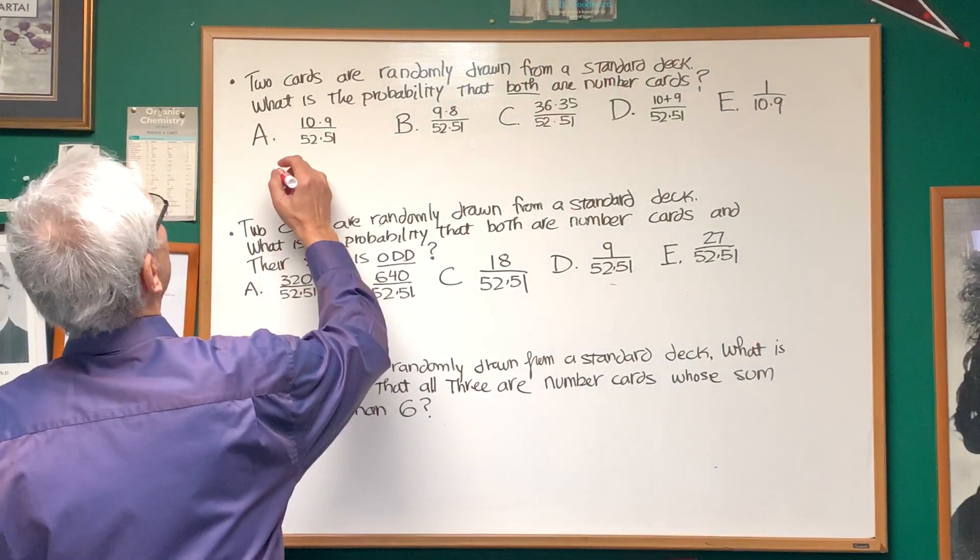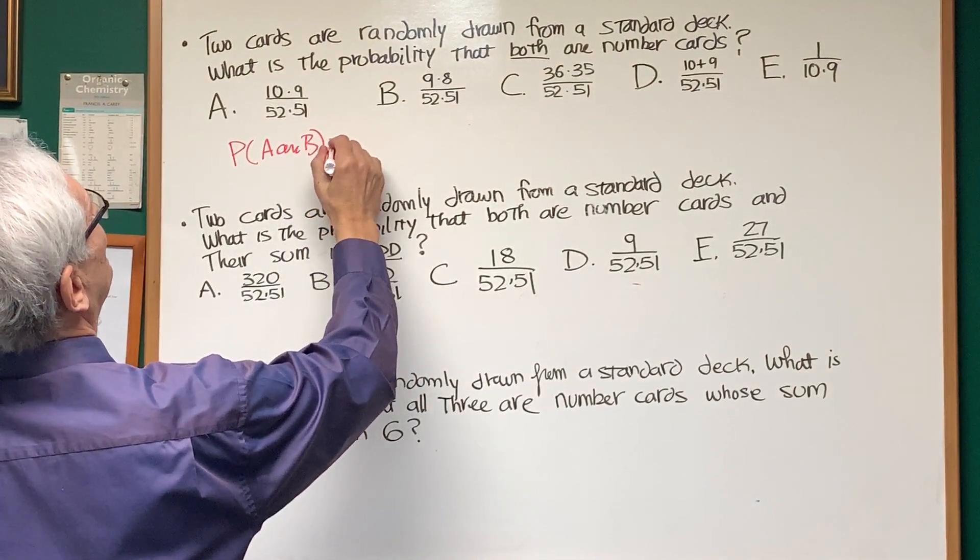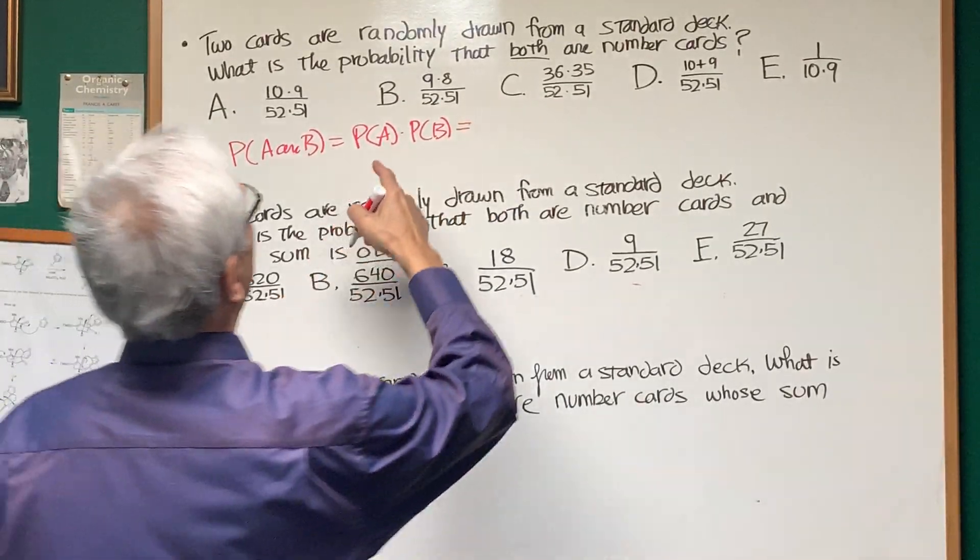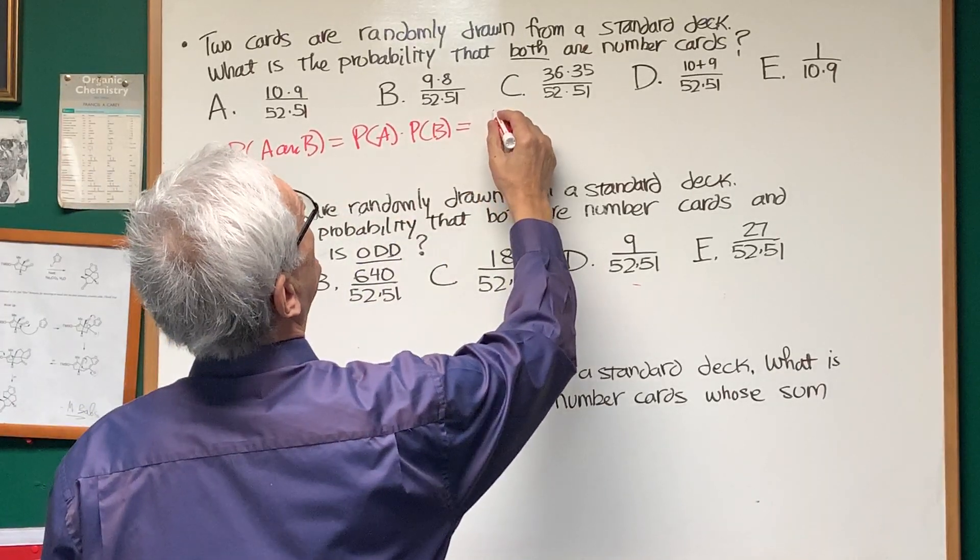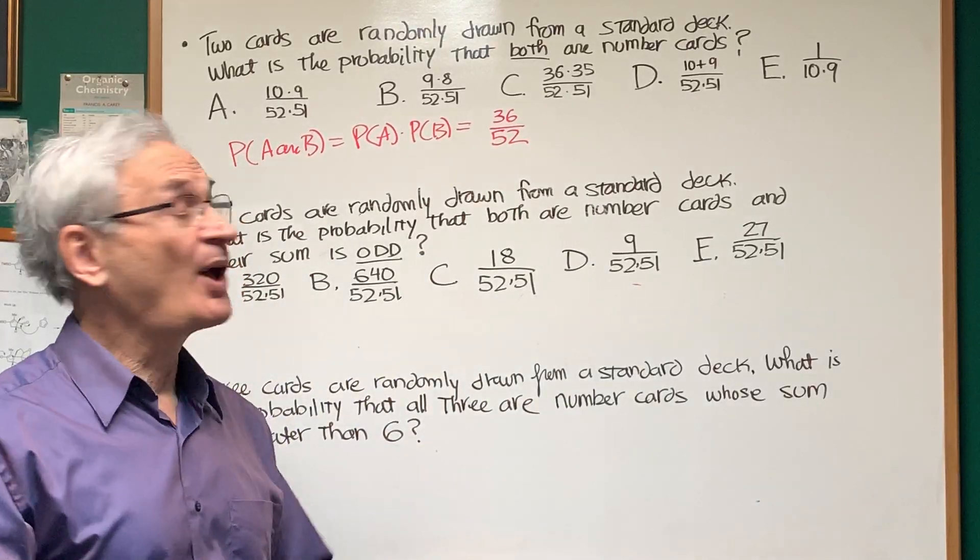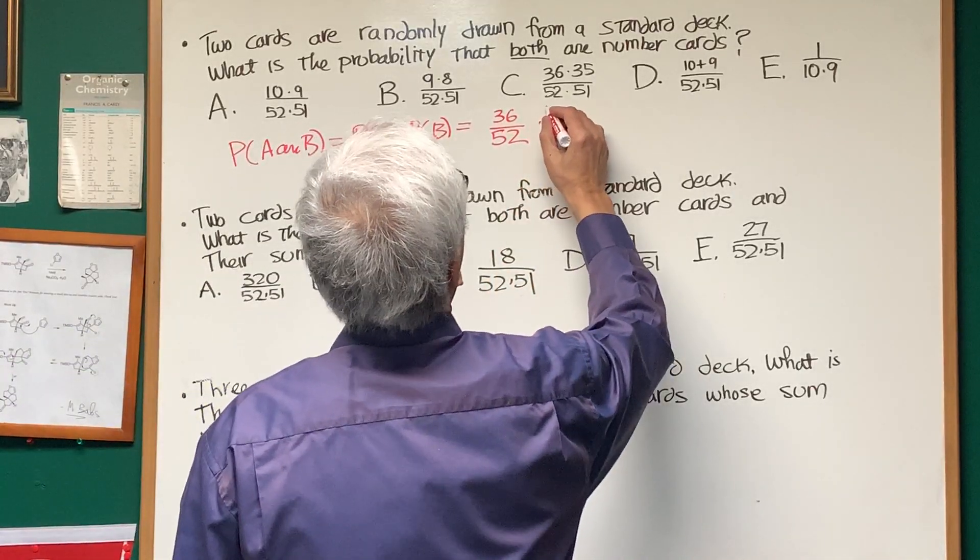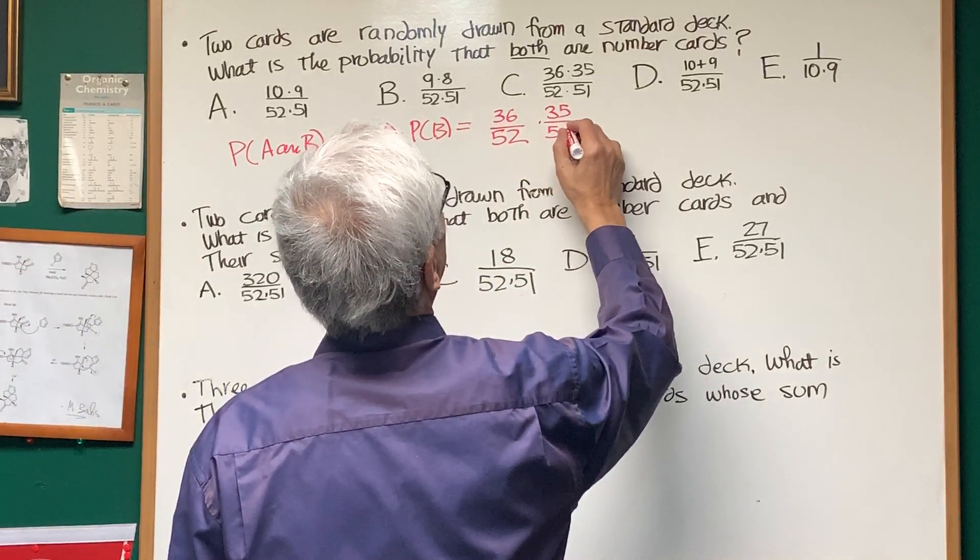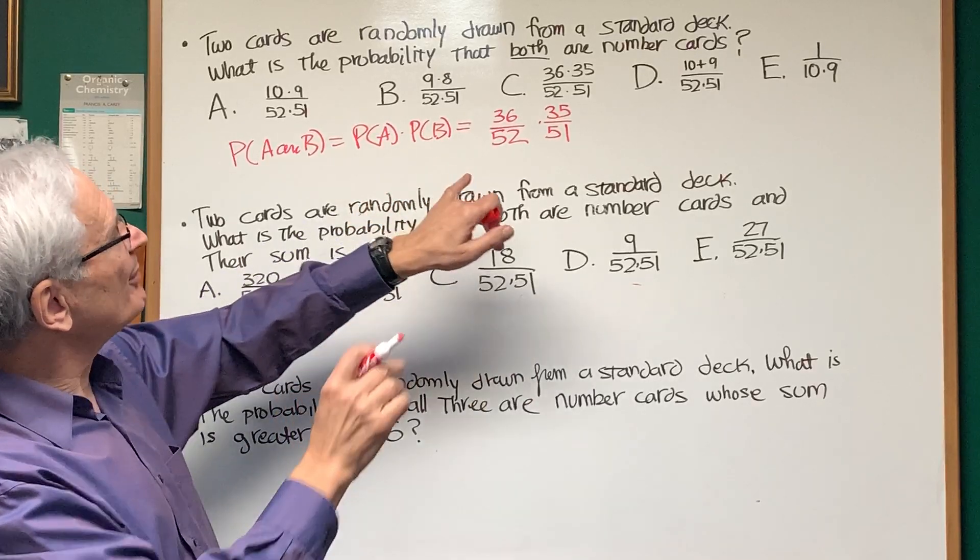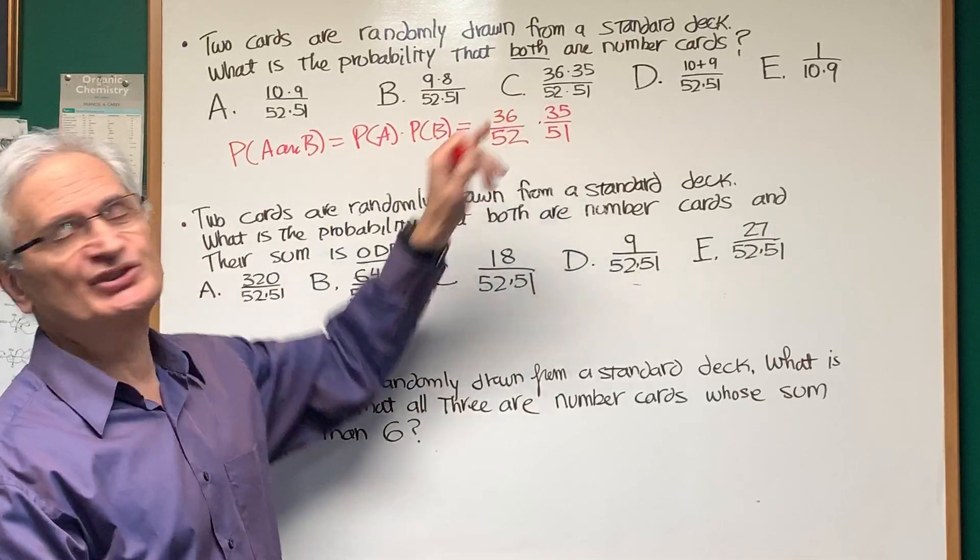So the probability of picking, let's say, of A and B, of picking 2 number cards is going to be the product of the probabilities because they're independent events. And the probability of A, we already said there are 36 number cards out of a total of 52. Once we've chosen that, how many number cards are remaining in the deck? 35. Out of how many cards in the deck? Only 51 because we've already taken one out. So the probability of drawing two number cards is 36 times 35 divided by 52 times 51, which is choice C.